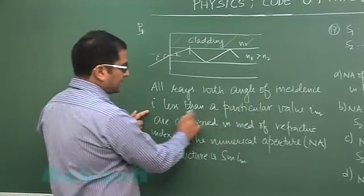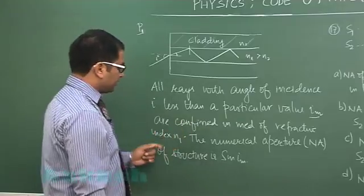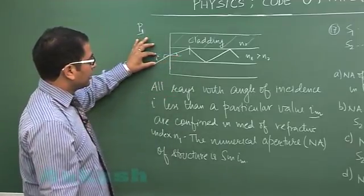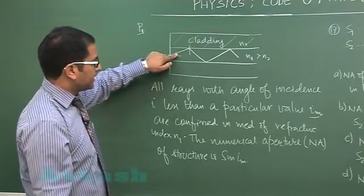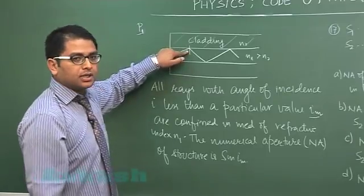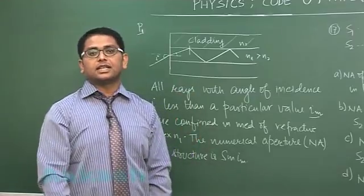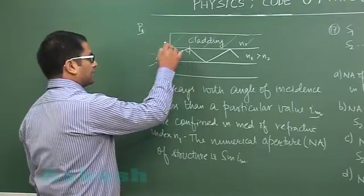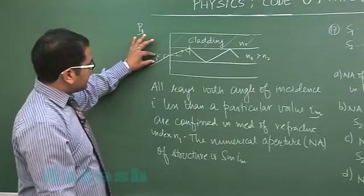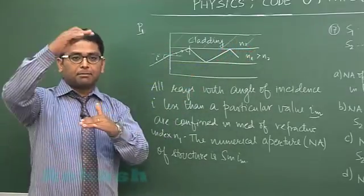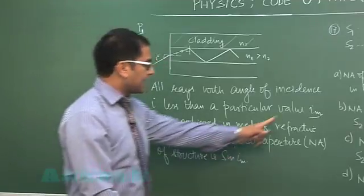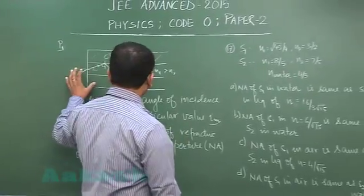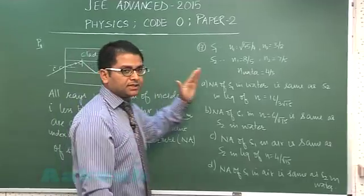All rays with angle of incidence i less than a particular value Im are confined in the medium of refractive index N1. For an engineer sending the light, they control i. A smaller i means a smaller refracted angle inside, a larger internal angle, and thus a greater chance of exceeding the critical angle — so TIR occurs. Therefore TIR requires a smaller external angle i, giving an upper limit Im, and sin Im is called the numerical aperture.